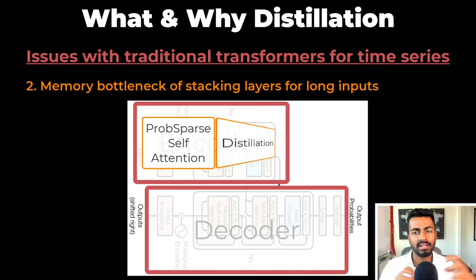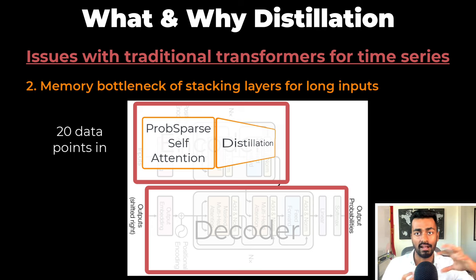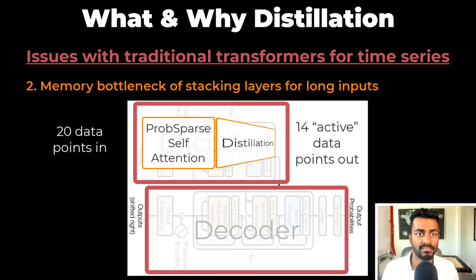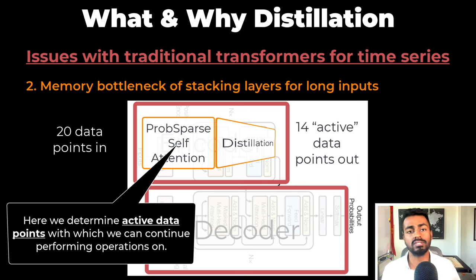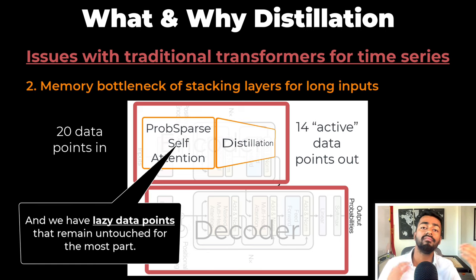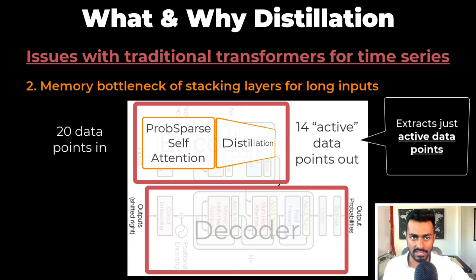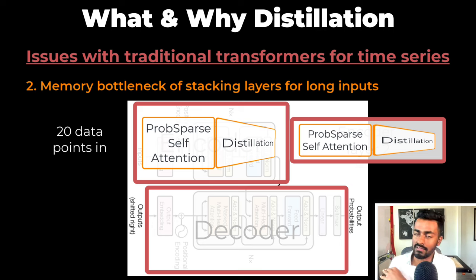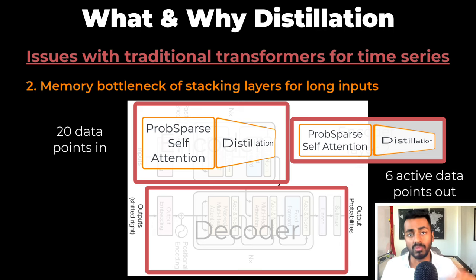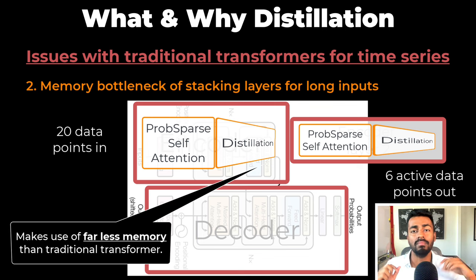Distillation in chemistry involves extracting some component from a mixture, and in much the same way, the informer extracts a subset of active data points from all the input data points. In one encoder layer, we perform the prob-sparse attention, which gives us active data points that we continue performing operations on, and lazy data points that remain untouched and just occupy space. So we can remove them, extract just the active data points, and pass this subset to the next encoder layer. In this way, when we stack the encoder layers, the informer architecture uses far less memory than the traditional architecture.